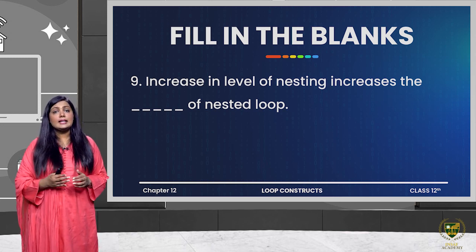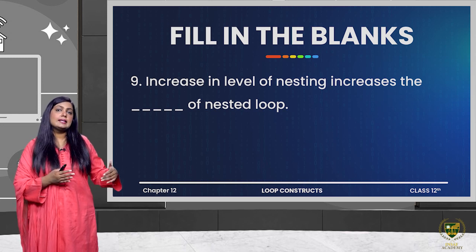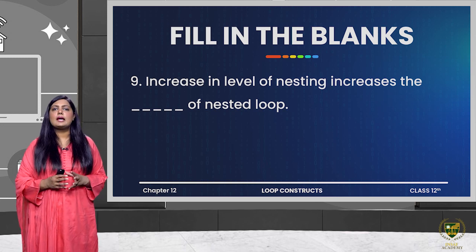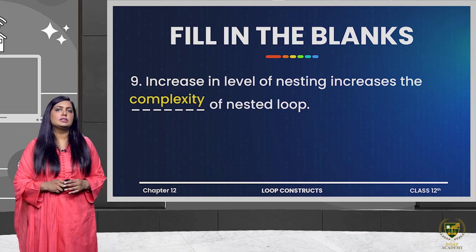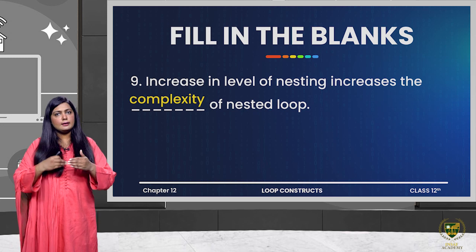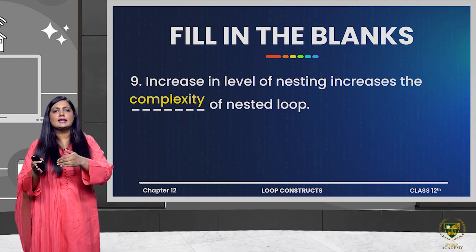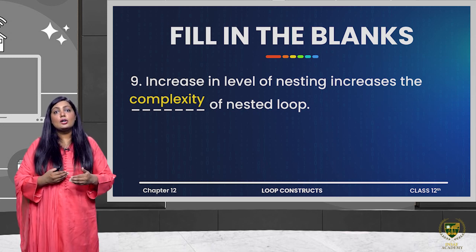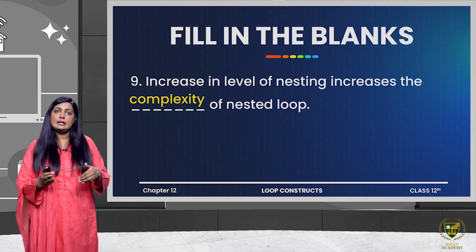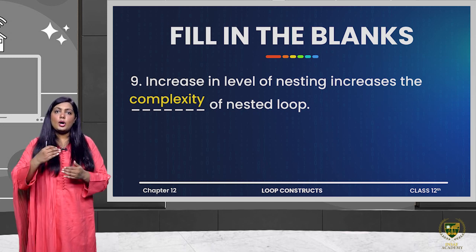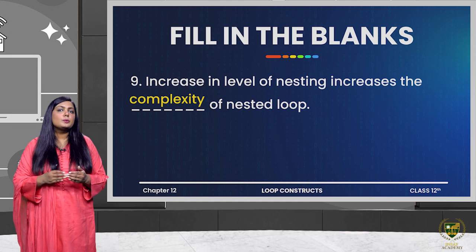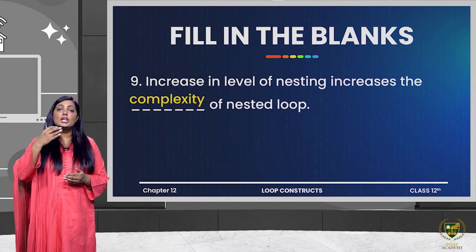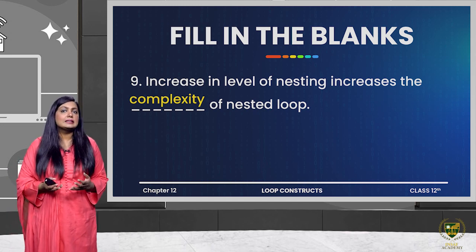The next question is: increase in level of nesting increases the dash of nested loop. When we increase nesting, the complexity increases greatly — it becomes difficult to handle and you may lose track of which variable was chosen for which level. Also, for the processor to execute it, it has to check across many levels, which is why complexity increases as the loop-within-loop nesting increases.